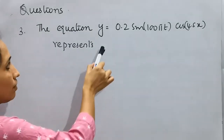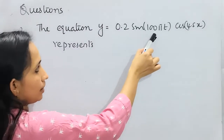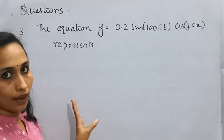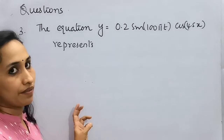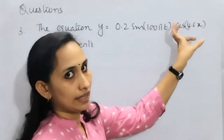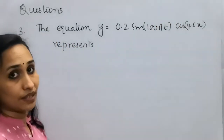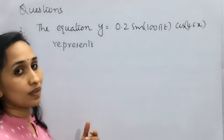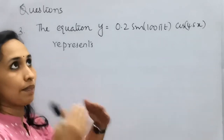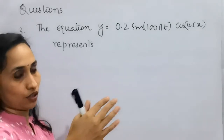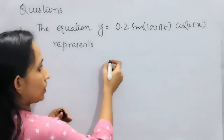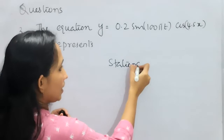Third question: the equation y = 0.2 sin(100πt) cos(4.5x) represents — look at the form. It is a product of an ωt term and a kx harmonic function, so it should be a stationary wave. The answer is: it is a stationary wave.